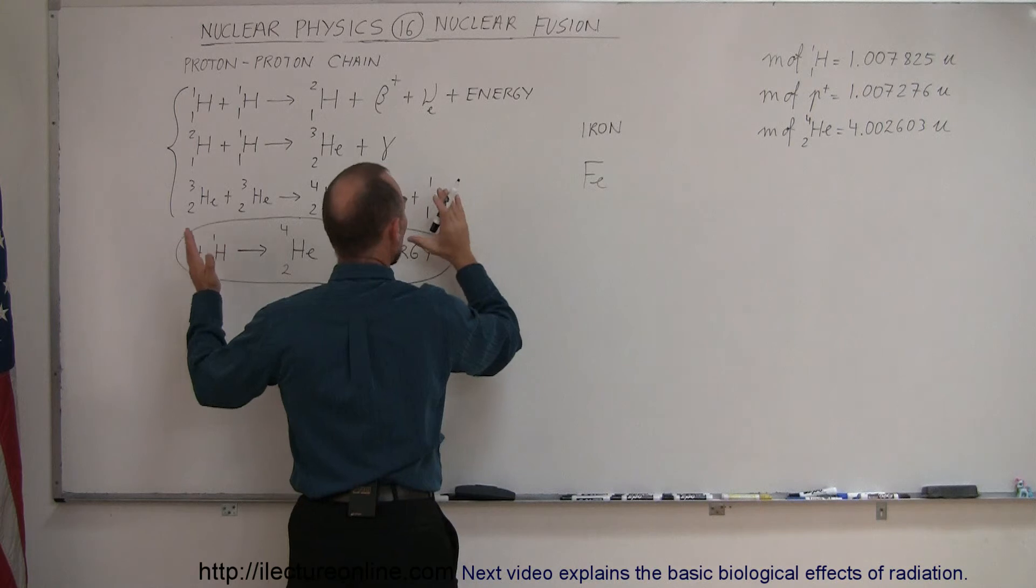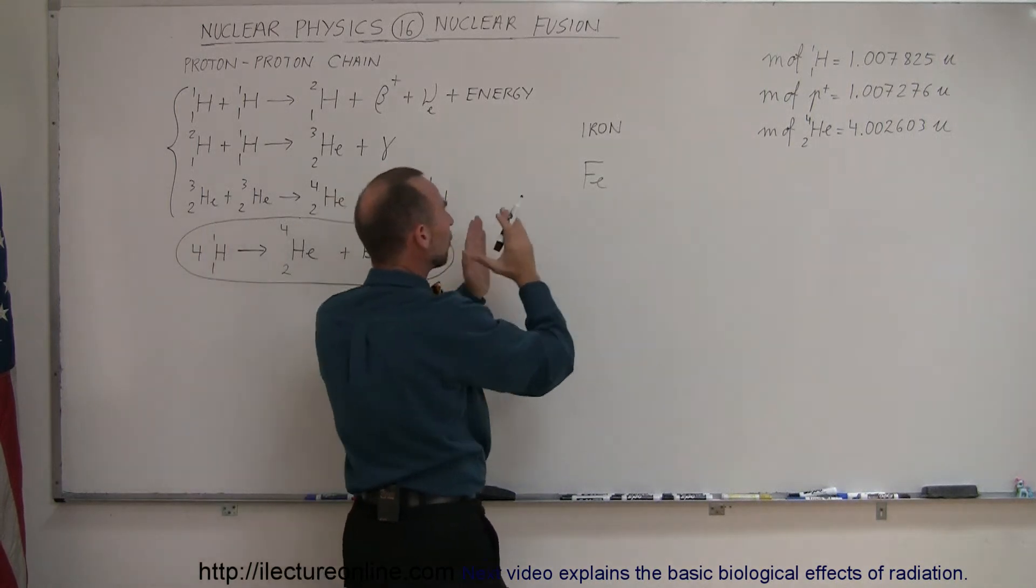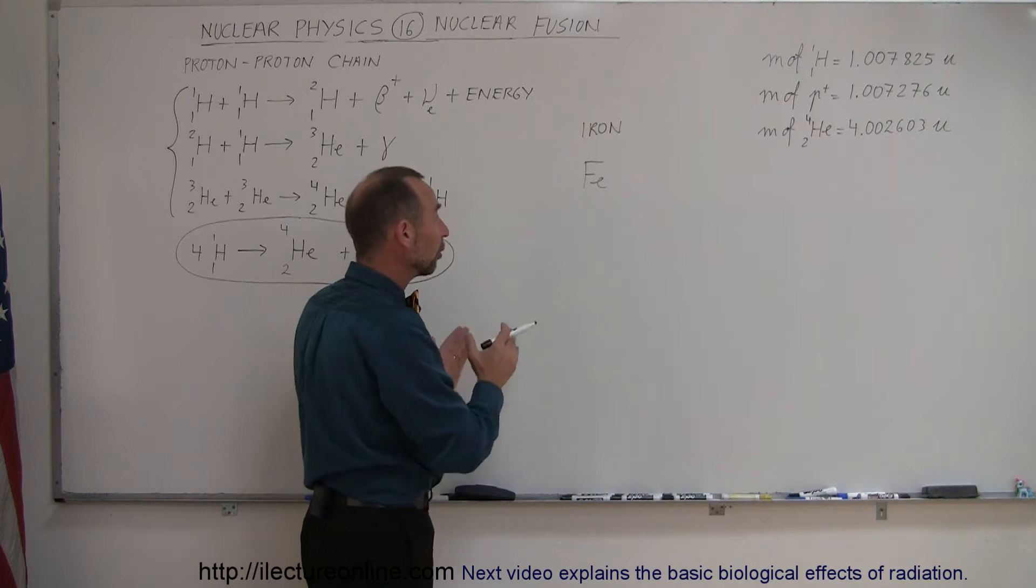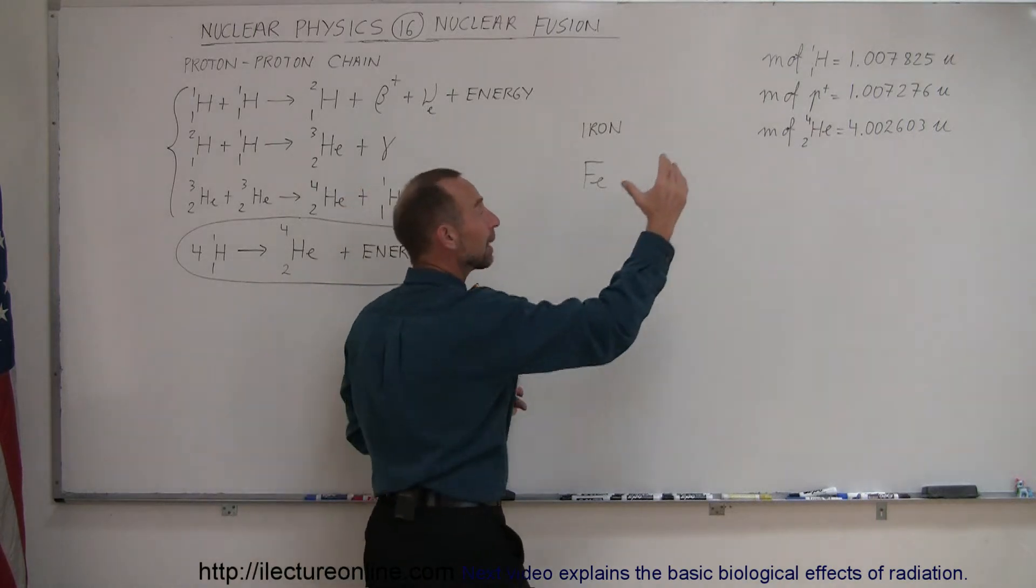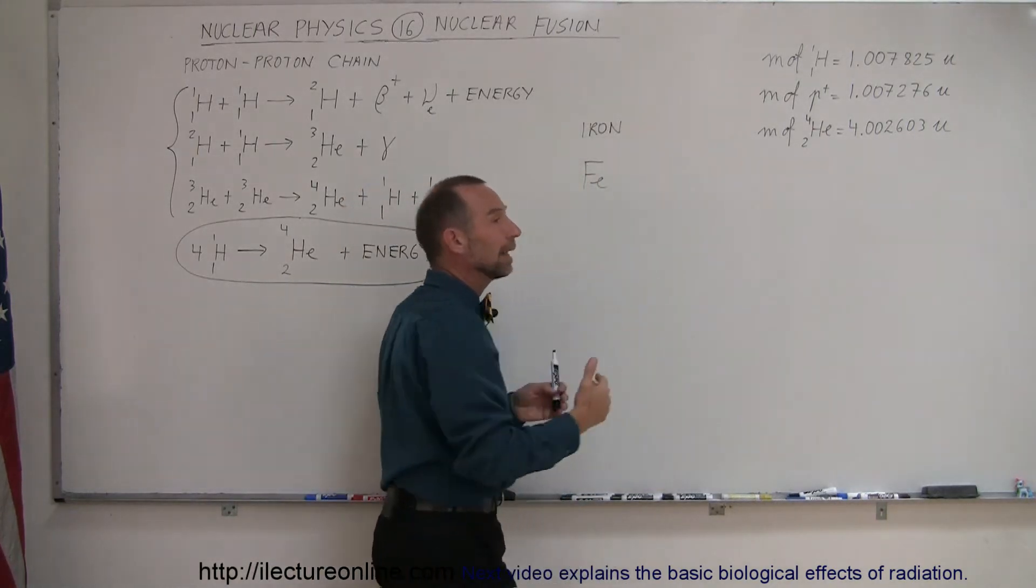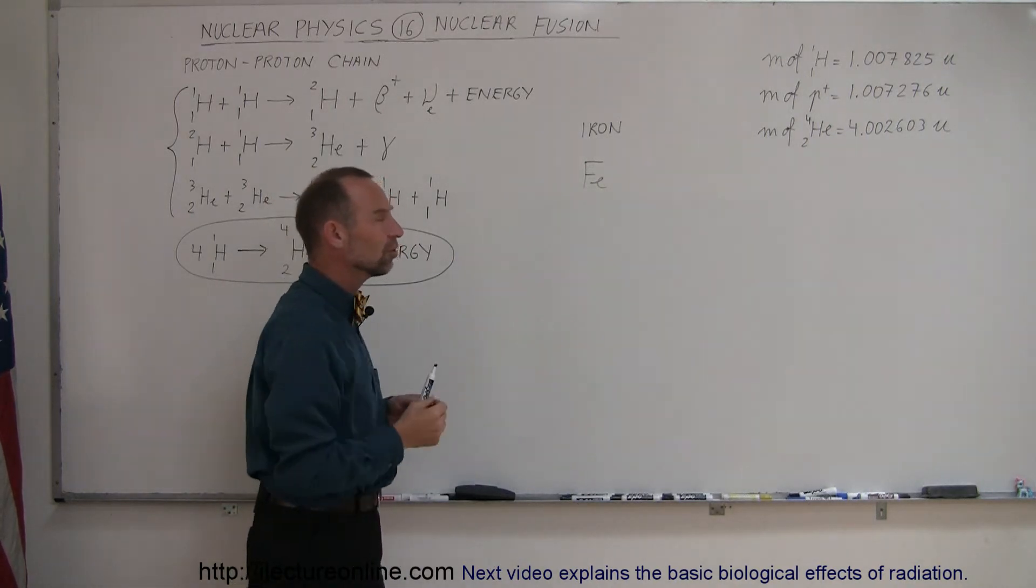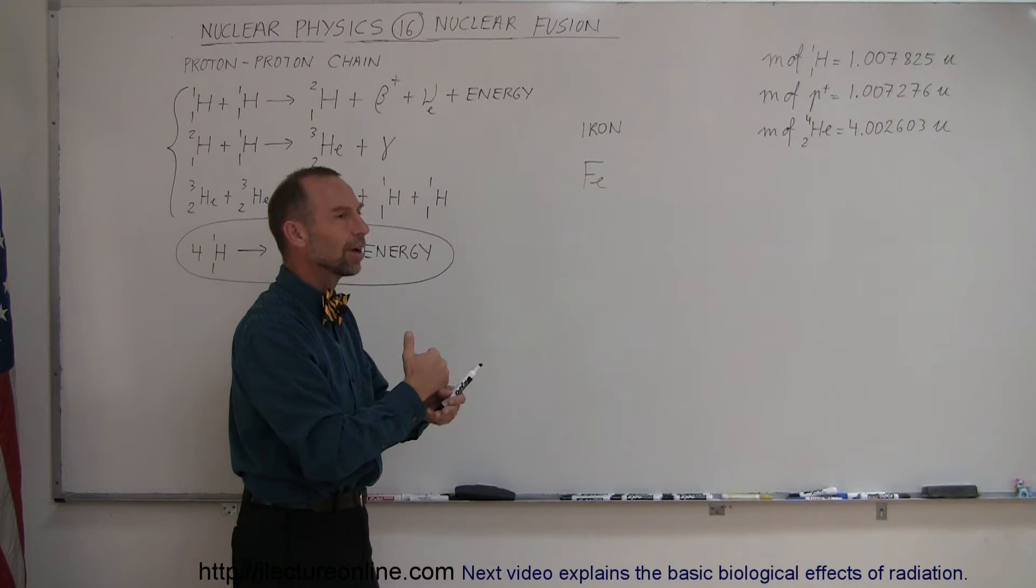Any element smaller than iron can be fused together and release energy because the resulting mass will be smaller all the way up to iron. Anything bigger than iron can be made smaller and therefore mass is released. But you can't cross iron.